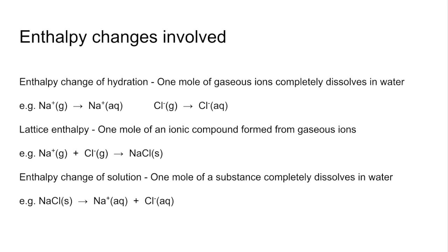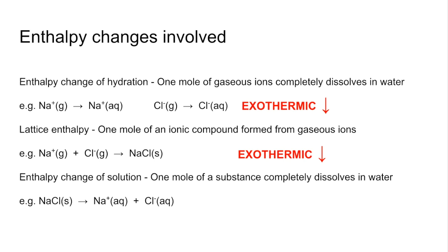Before we get into the cycles, let's talk about whether each process is exothermic or endothermic. Enthalpy change of hydration is always exothermic, represented by a downwards arrow on the Born-Haber cycles — it releases energy due to attractions between the dipoles on the water molecule and the charges on the ions. Lattice enthalpy is also always exothermic because ionic bonds are being formed, again shown by a downwards arrow. Enthalpy change of solution can be either exothermic or endothermic, and endothermic processes have an upwards arrow on these cycles.